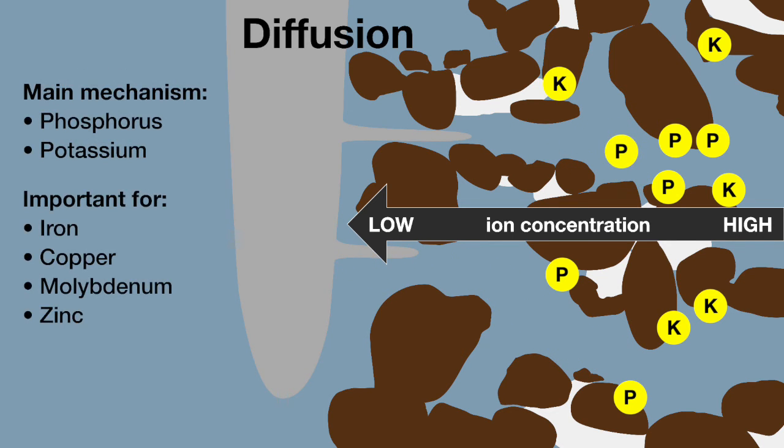Diffusion is the main mechanism of phosphorus and potassium supply to roots, but it is also important for iron, copper, molybdenum, and zinc.